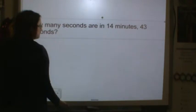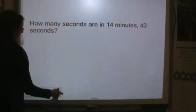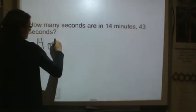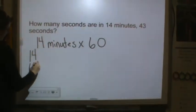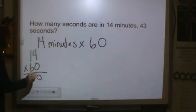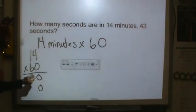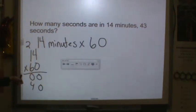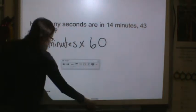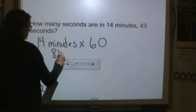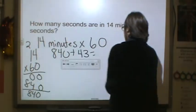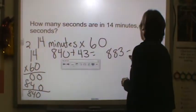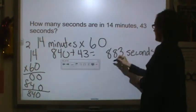How many seconds are there in 14 minutes, 43 seconds? Well, remember minutes to seconds you multiply by 60. I don't know 14 times 60 off the top of my head, so I'm going to do some basic math. 0, 0, drop a 0. 6 times 4 is 24. 6 times 1 is 6 plus 2 is 8. 840, so that's the 14 minutes. But we also have 43 seconds, so we need to add those. So we have 883 seconds.